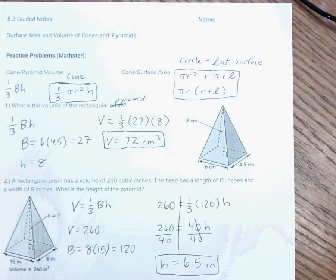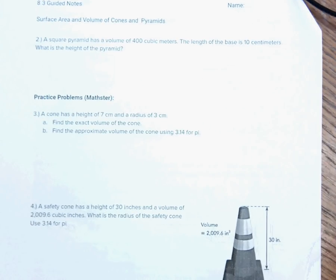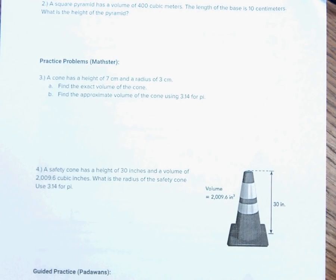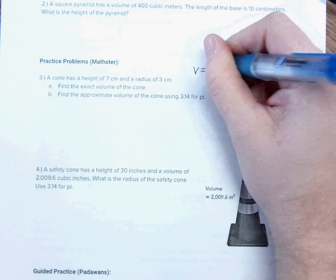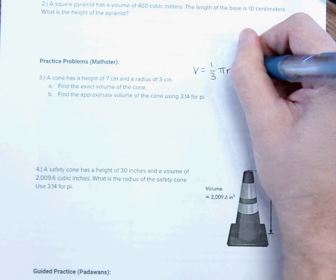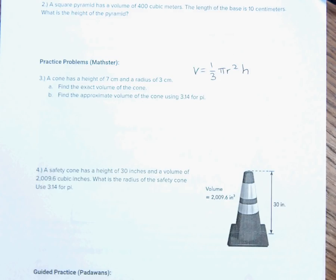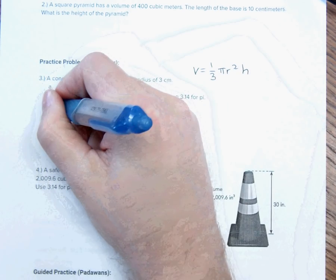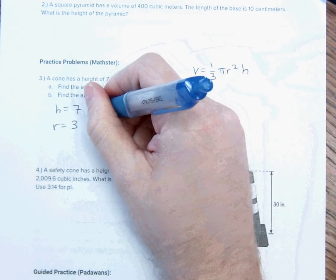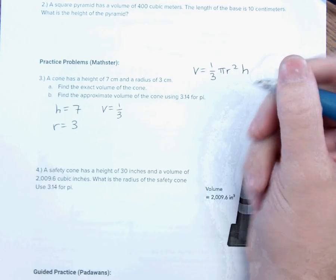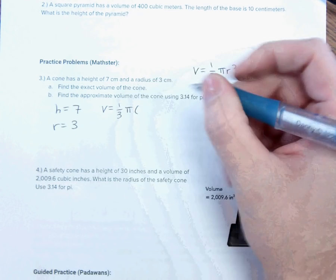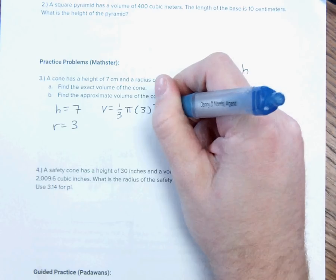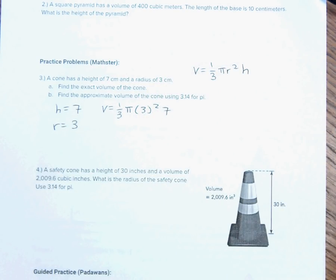So, this is Padawan, and then me. A cone has a height of 7 centimeters and a radius of 3 centimeters. Find the exact volume of the cone. So, the volume of the cone is one-third pi r squared h. So, we know that h is 7 and r is 3. So, we can say the volume equals one-third pi times r squared, which is 3 squared times h, 7. And notice, I did not put in 3.14 for pi, because it said exact.